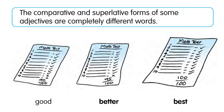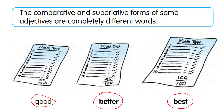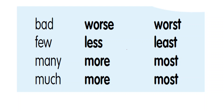The comparative and superlative forms of some adjectives are completely different words. Like good, better, best — the positive form is good, the comparative form is better, and the superlative form is best. Bad, worse, worst — bad's comparative form is worse and superlative form is worst. Few — comparative form is less, superlative form is least. Many — comparative form is more, superlative form is most. Much — comparative form is more, superlative form is most.